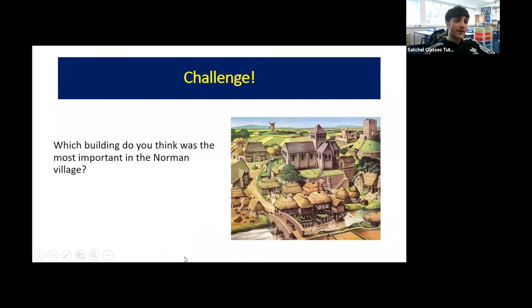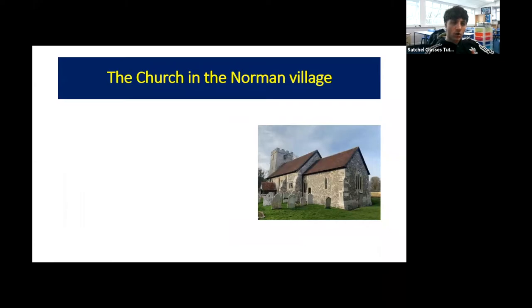A quick challenge: thinking about the buildings likely to be in a Norman village — the mill, the houses, the manor house, the church — which building do you think was the most important? The church was arguably the most important building in the village. You could make a strong case for the manor house, since it housed the single most powerful individual — the local lord — but the church arguably trumps even that.